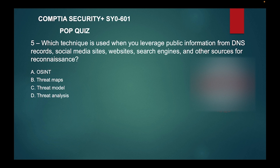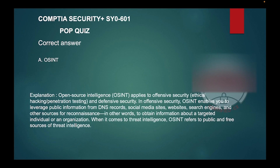Number five asks about other sources for reconnaissance. The answer options include A) OSINT (Open Source Intelligence), B) Threat maps, C) Threat model, or D) Threat analysis. The correct answer is A, OSINT, also known as Open Source Intelligence, which applies to offensive security, ethical hacking, penetration testing, and defensive security.